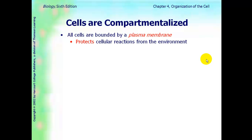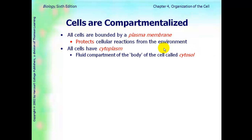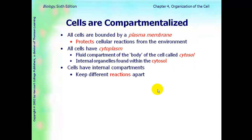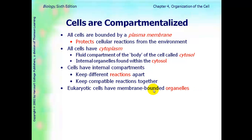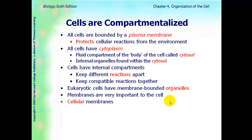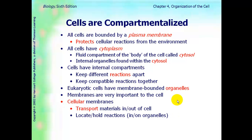All cells are bounded by a plasma membrane. The cell membrane protects cellular reactions from the environment. All cells have cytoplasm; the fluid part is called cytosol. The organelles are found within the cytosol. Cells have internal compartments — they keep different reactions apart and keep compatible reactions together. In eukaryotic cells, a lot of the organelles are membrane-bounded. Cellular membranes transport material in and out of the cell, and also hold the location of where reactions occur, either in the organelle or on its membrane.